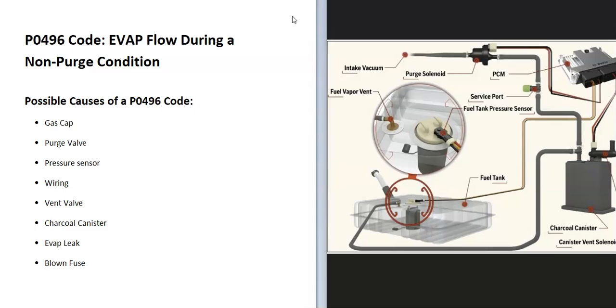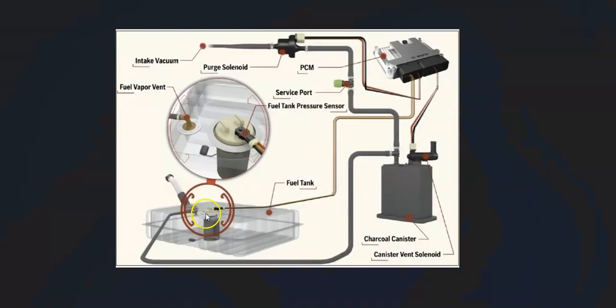The basics of what's going on with this EVAP system is that you have a hose coming from the gas tank, it goes up to what's called a charcoal canister, and this basically stores the gas vapors when the engine's not running.